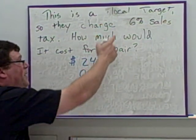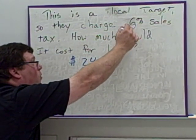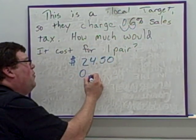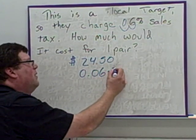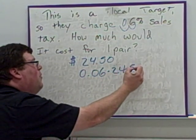Well, we know the sale price is now $24.50. We're going to multiply that by the 6% as a decimal, two places over, I get 0.06 times the 24.5.